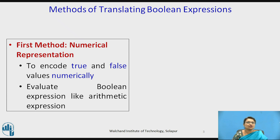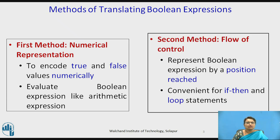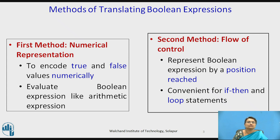There are two methods of translating boolean expressions, as seen in the earlier video. The first method is numerical representation — how a normal boolean expression is converted into three address code. In this video we will be looking at the second method: boolean expressions used for controlling the flow of execution of the program.